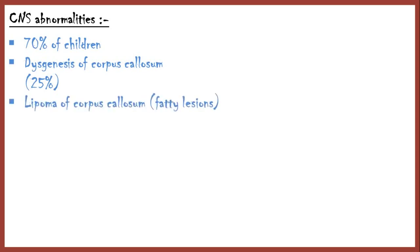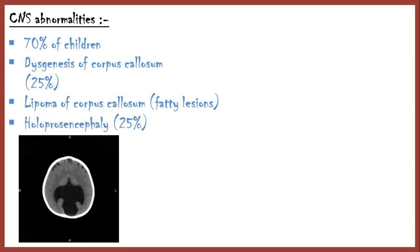About 70% of children show other CNS abnormalities, such as dysgenesis of the corpus callosum, benign fatty lesions on the corpus callosum also known as lipomas, holoprosencephaly—a condition in which the cerebrum has not divided into two hemispheres, and dysplasia of the cingulate gyrus.